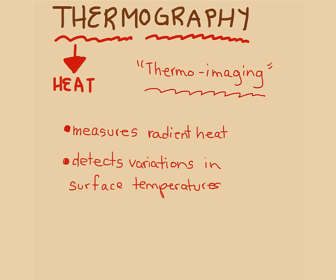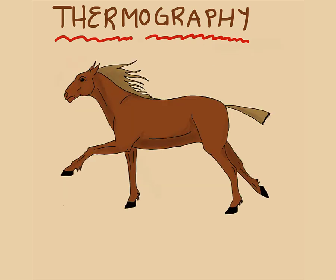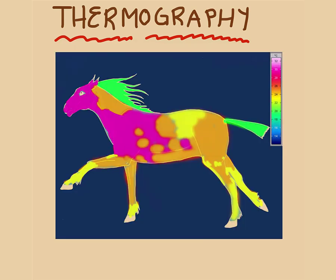In fact, it's a technique used to measure radiant heat and detects variations in surface temperatures. So say for example we have a horse. When we use equipment that gives us an infrared image of the horse, this is what we see.